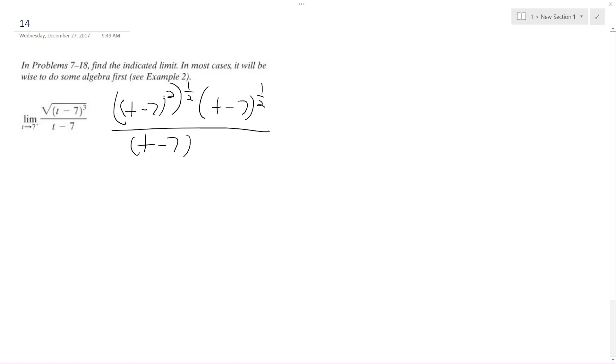So anything raised to the second, raised to the 1 half, is the same thing as just exactly what it is. So this becomes t minus 7, and then we have t minus 7 raised to the 1 half, and then we have t minus 7. So these cancel off.